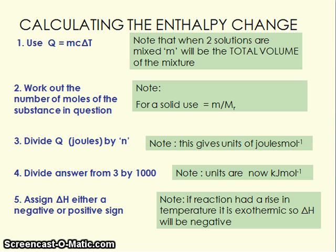Once we've calculated our heat change, you'll quite often be asked to convert that into a delta H for the enthalpy change. The first step is to use Q equals mc delta T. Be careful: if you mix two solutions — for example in a neutralisation reaction — you have to use the total volume of the mixture, because once you've mixed the acid and alkali together, the whole solution is heated, not just one of them.